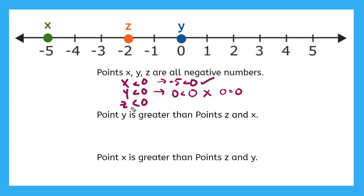This next one says z is less than 0. Is that true? If we have negative 2 less than 0, is that a true inequality? Yes. But if we have two true inequalities and one inequality that's not true, that means our overall statement is false.